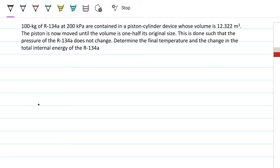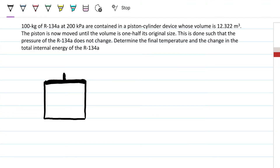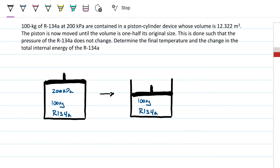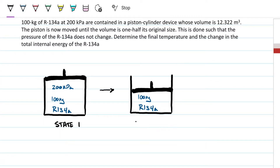We have a different setup compared to last time. We have a piston, so let's draw that piston here. We have the same refrigerant R134A inside — a hundred kilograms of it. In this first state we have 200 kilopascals. What we're going to do from state one to state two is compress the container to half the volume, so volume two is half of volume one.